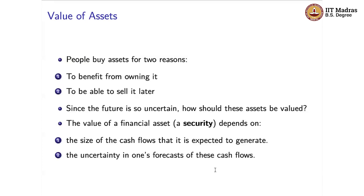Because the future is uncertain, we have to deal with how this uncertainty plays into thinking about how to value different assets. To summarize: the value of a financial asset — also known as a security — depends on at least two things: the size of the cash flows it is expected to generate, and the uncertainty in one's forecast of those cash flows. Cash flows are basically a way of monetizing the benefits you are going to get. For instance, if you own a flat and are staying in it, you're not being paid money directly, but we attach a monetary value to the benefits you enjoy.